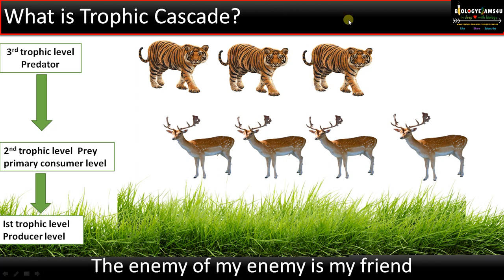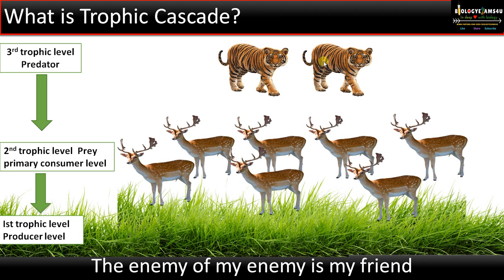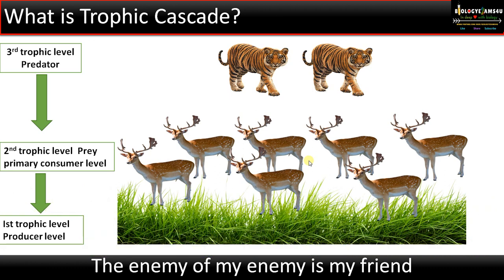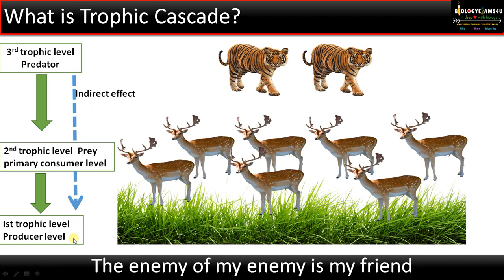Think of a situation if the number of tiger population decreases or declines — that increases the number of prey population. That will cause a reduction in productivity at the producer level. So this tiger population is having a direct impact on the prey population and an indirect impact or effect on the abundance, density, or number at the producer level. This indirect effect of predators at successively lower trophic levels is termed as trophic cascade.